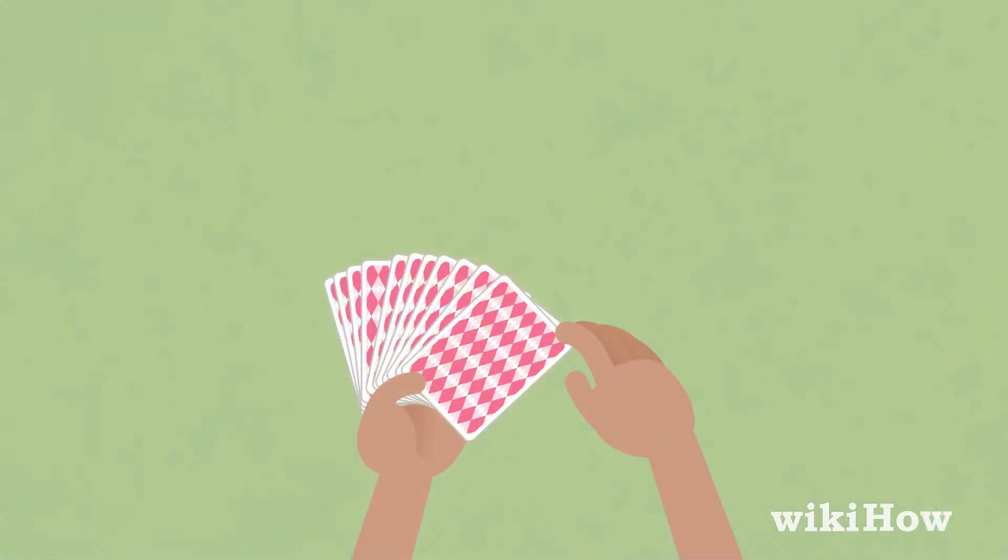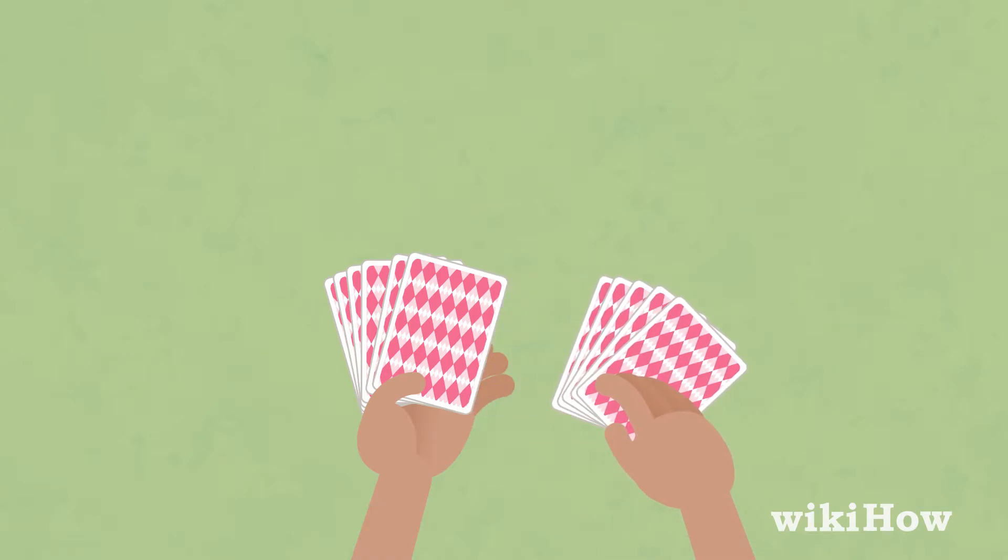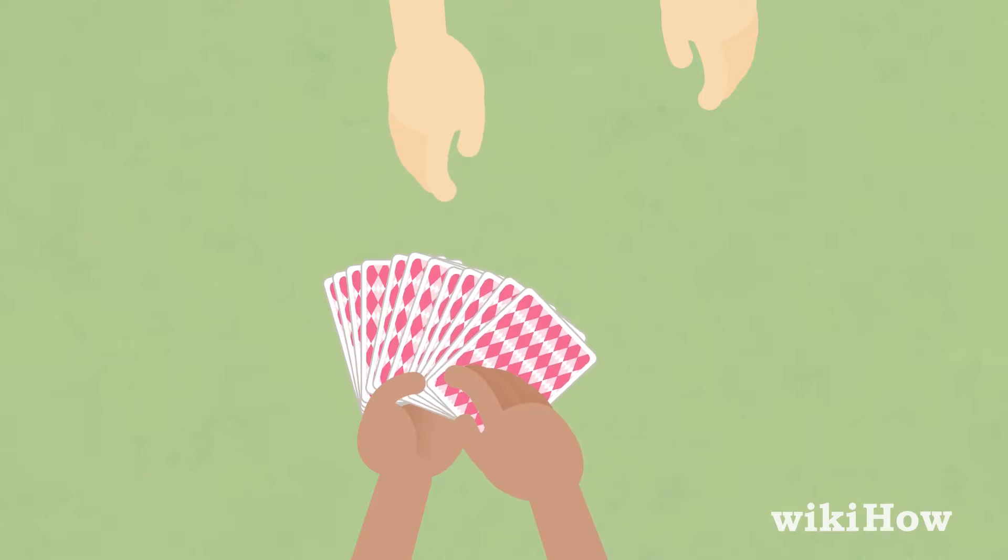While they're looking at their card, split the deck in half and take a peek at the bottom card of the top half. Then, ask them to put their card on top of the bottom half of the deck and put the deck back together.